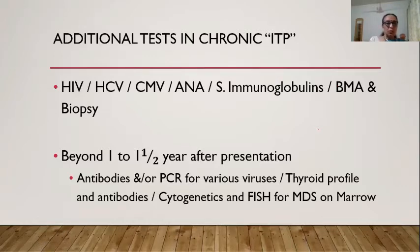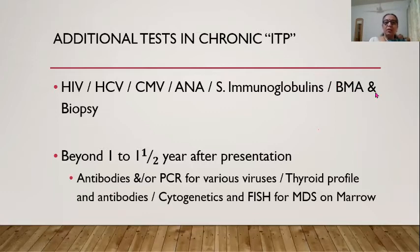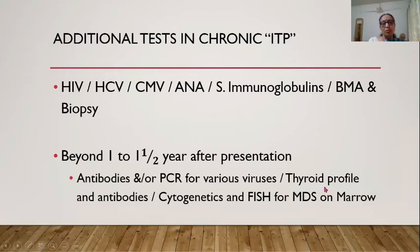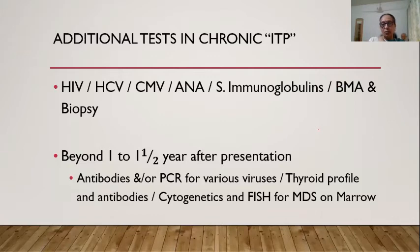In chronic ITP patients, additional tests should be done since they likely have underlying conditions. These include: cytogenetics and FISH for MDS, thyroid profile and antibodies, PCR for various viruses. If low counts persist, these should be considered.